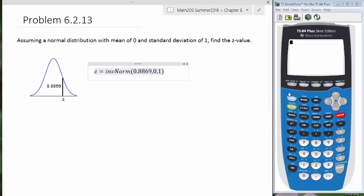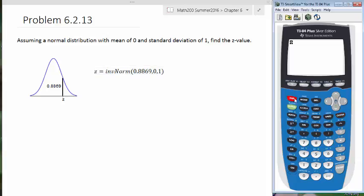So we go to our calculators and we say second and distributions. And the inverse norm, for me at least, it's a third one down. So I'll select that and I'll click enter or I can just hit three. And then I put in the values.